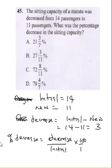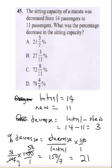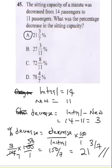Applying the formula: 3 over 14 times 100. Simplifying by dividing numerator and denominator by 2 gives 50 over 7, which equals 150 over 7. Dividing 150 by 7 gives 21 and 3 over 7, so the percentage decrease is 21 and 3/7 percent. That is the final answer for this question.